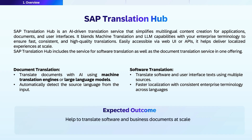SAP TranslationHub is an artificial intelligence-powered service that simplifies multilingual content creation for applications, documents, and user interfaces. It combines machine translation with large language models and your enterprise terminology to deliver fast, consistent, high-quality results. You can access it through a web user interface or through APIs for document translation.